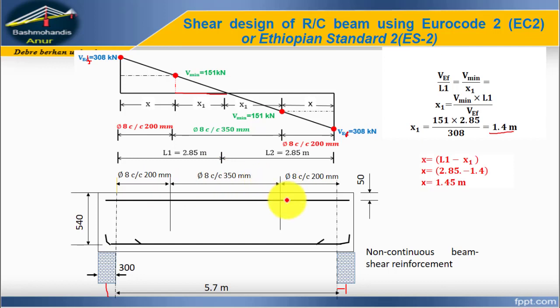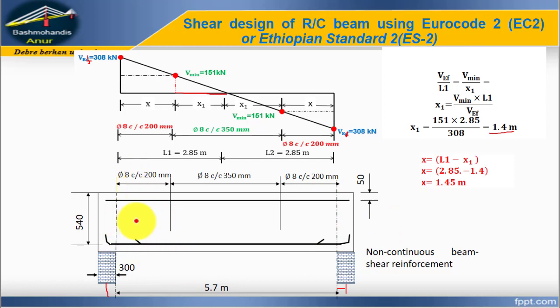We have calculated the minimum shear resistance of the minimum shear link and are able to draw the shear envelope diagram showing the detailing layout. This is all about how to design a simply supported beam to resist shear.